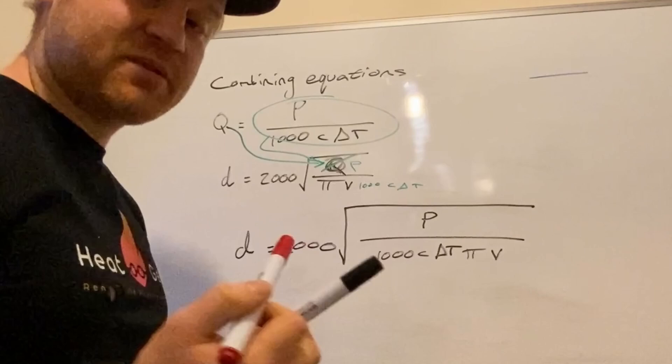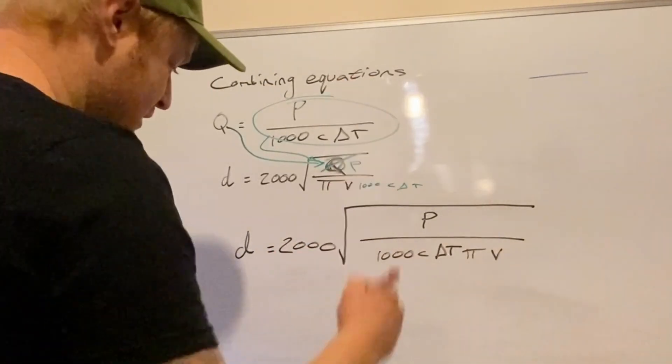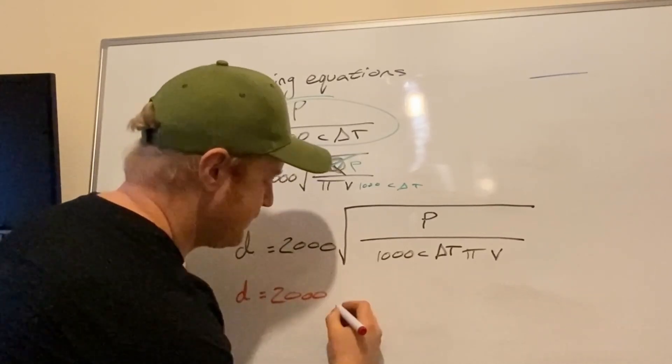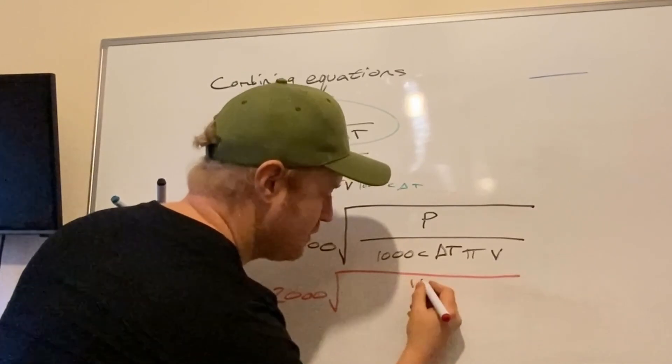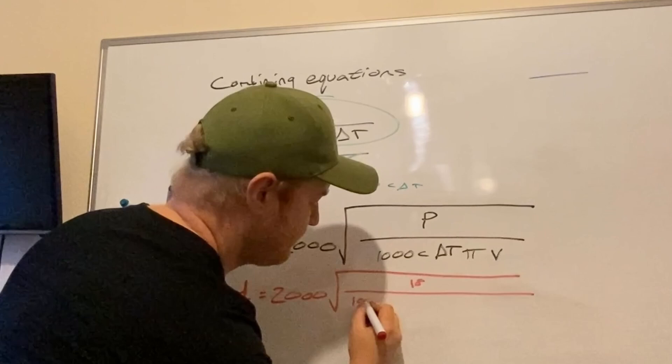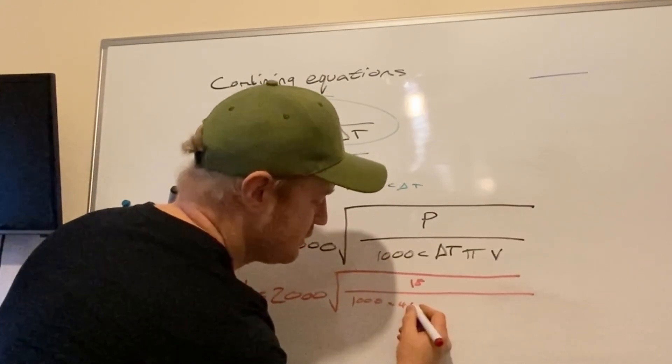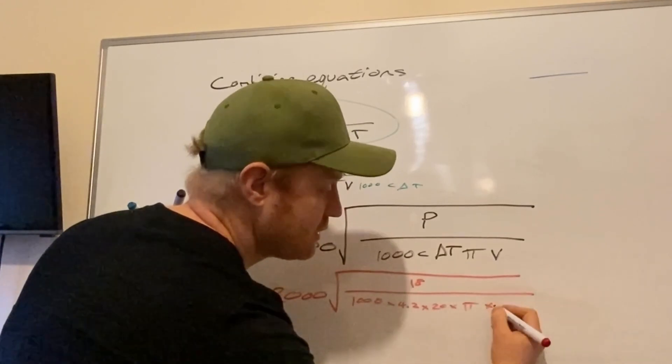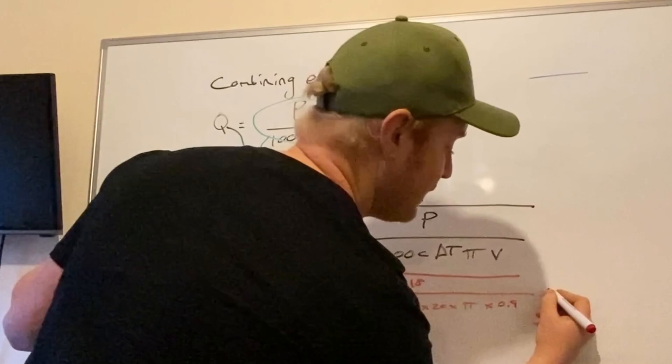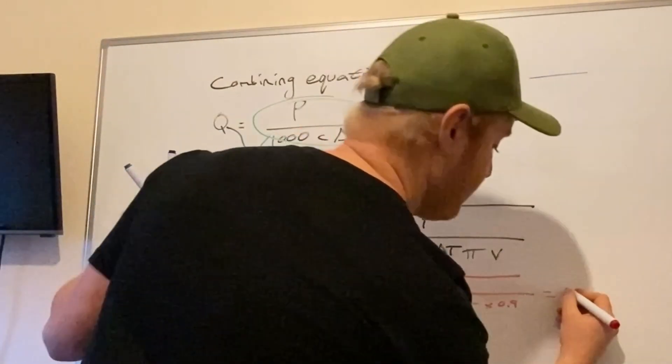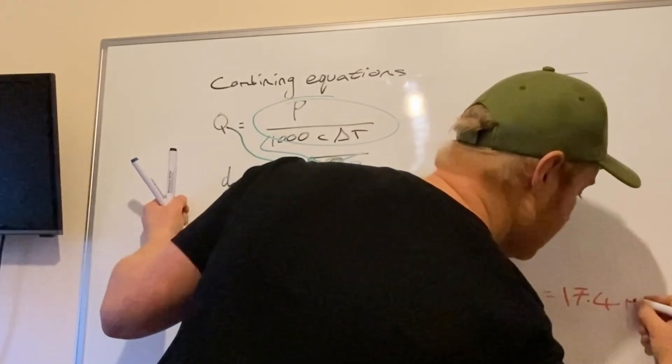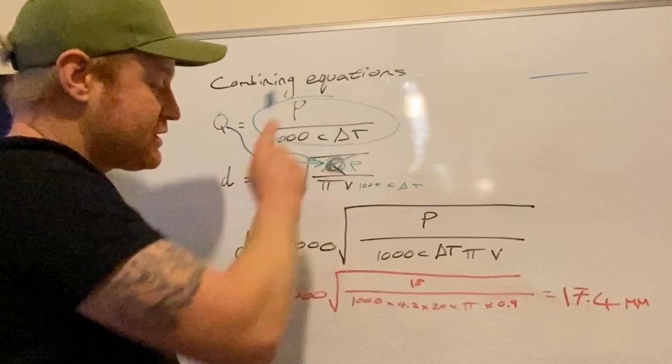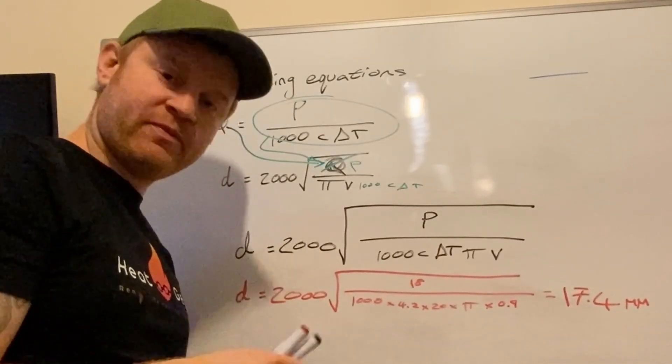You can work it out. Trust me, it works out. I've done an example. And the example is using 18 kilowatt, which was two thousand times the square root of 18 kilowatt divided by a thousand times 4.2 times dT 20 times π times 0.9, and this came out to 17.4 millimeters. So that equation there was found by combining equations. And yeah, highly recommend saving that one. Hope it helped.